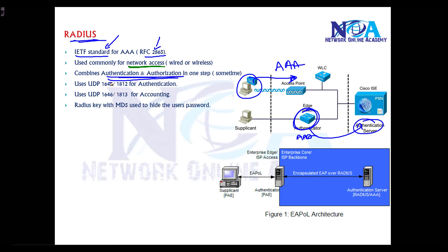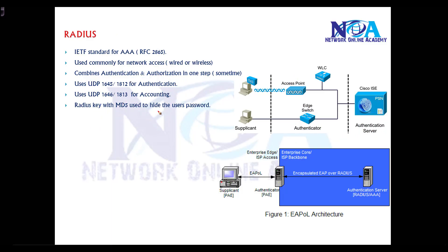RADIUS combines authentication and authorization in one single step. It uses port numbers 1645 for authentication and 1646 for accounting as legacy ports, and currently uses 1812 for authentication and 1813 for accounting. By default, RADIUS only hides the password using MD5 — it does not encrypt the entire packet or payload.